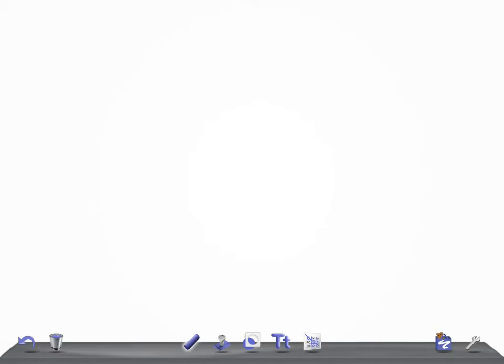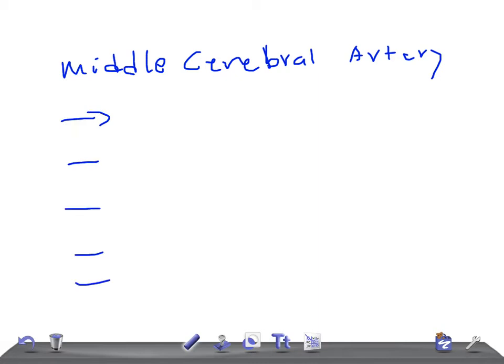What if middle cerebral artery is occluded? What are the signs and symptoms for USMLE? Remember, when the middle cerebral artery is occluded, there is profound upper extremity weakness.